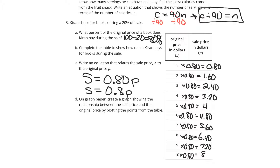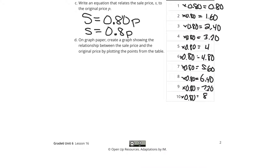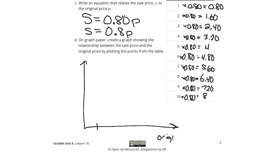On graph paper, create a graph showing the relationship between the sale price and the original price by plotting points from the table. You could set this up with the original price on your x-axis going 1 through 10, and 1 through 8 on your y-axis for the sale price.